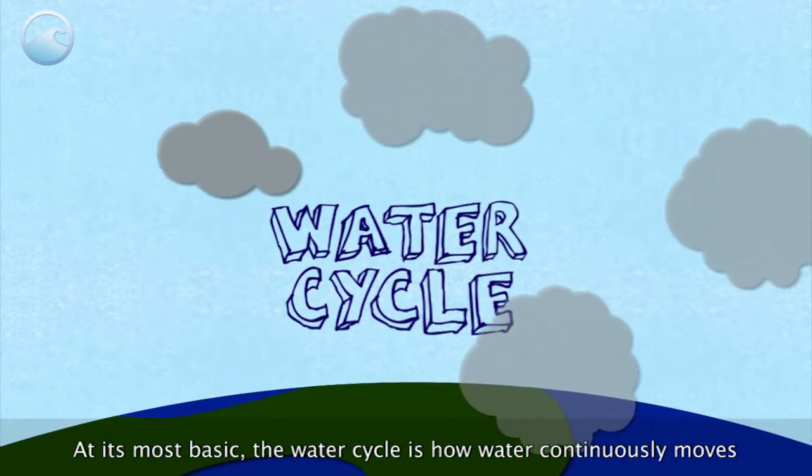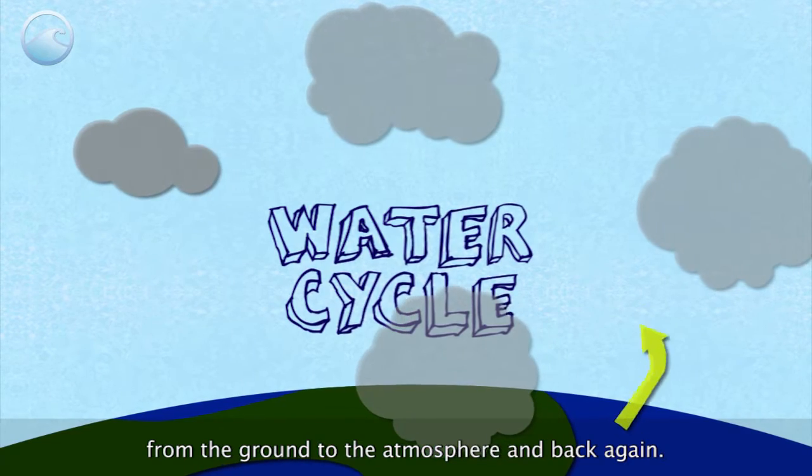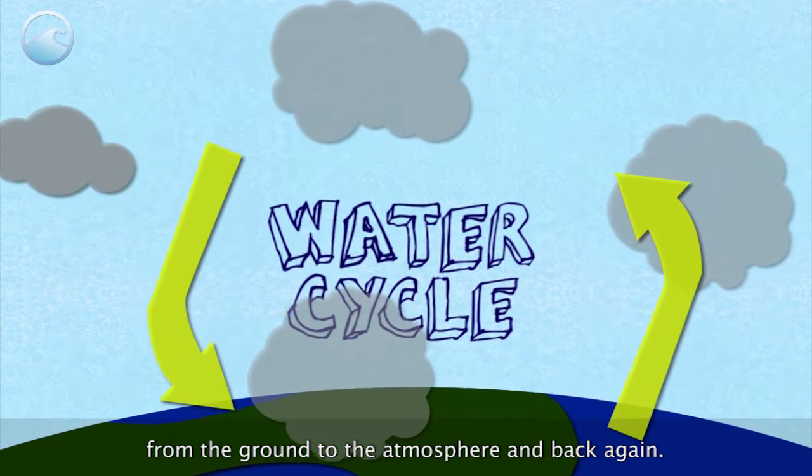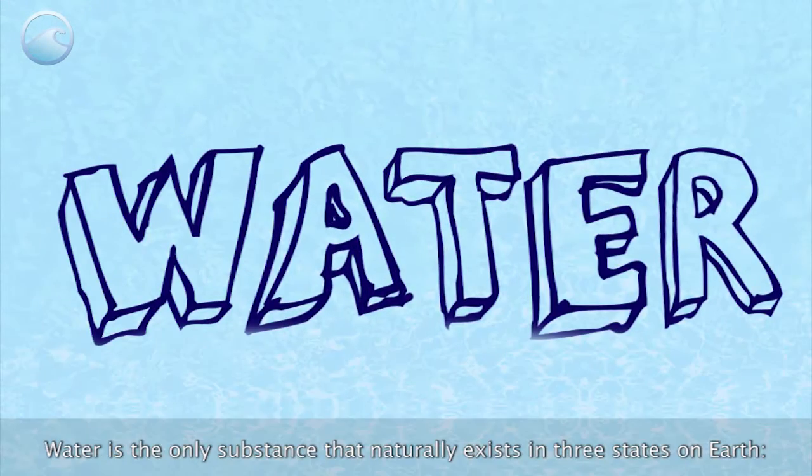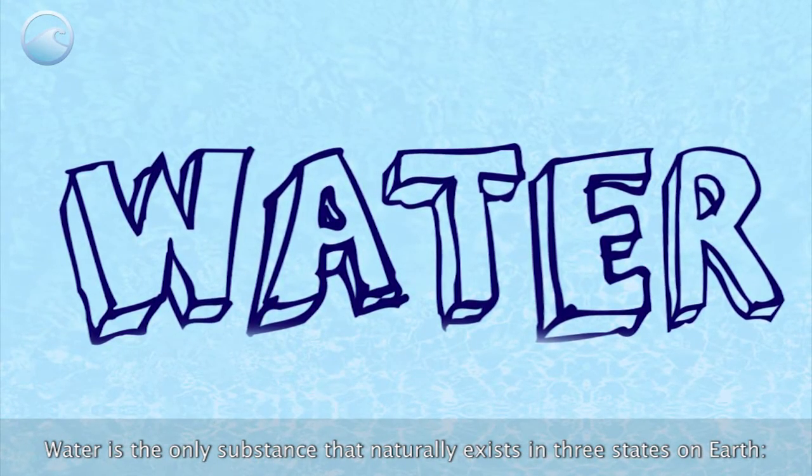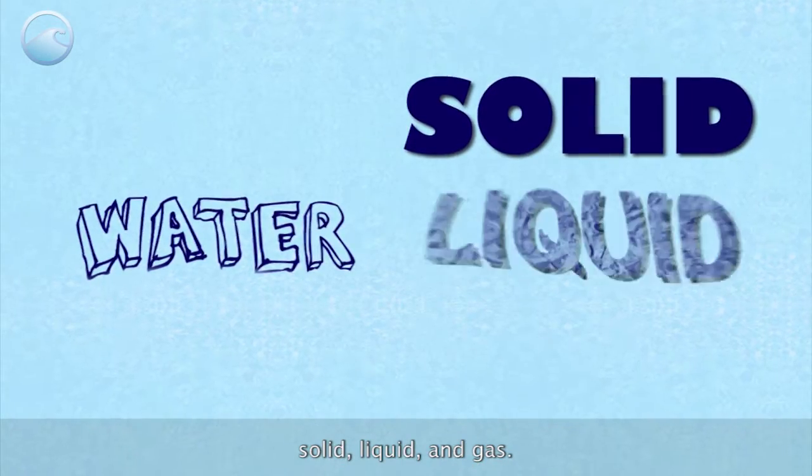At its most basic, the water cycle is how water continuously moves from the ground to the atmosphere and back again. As it moves through this cycle, it changes forms. Water is the only substance that naturally exists in three states on Earth: solid, liquid, and gas.